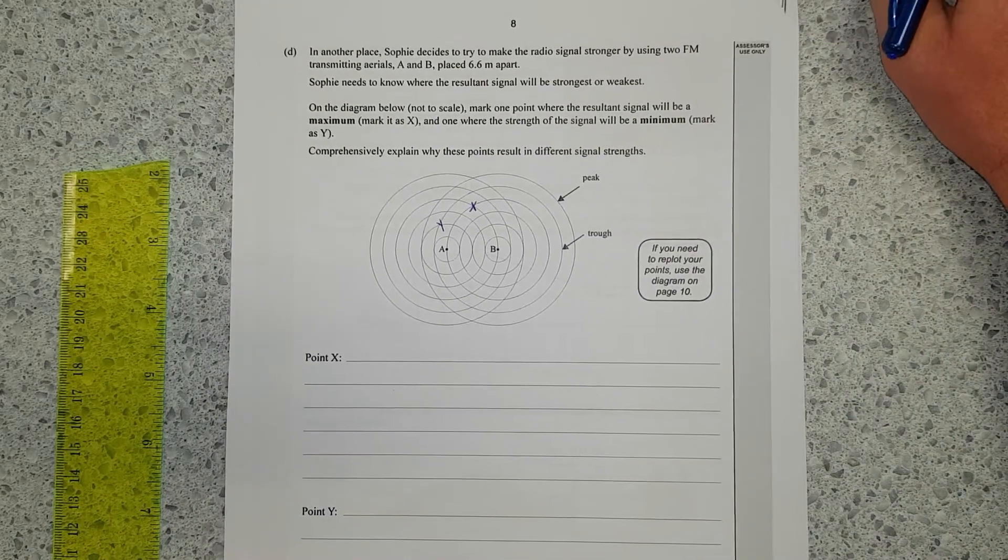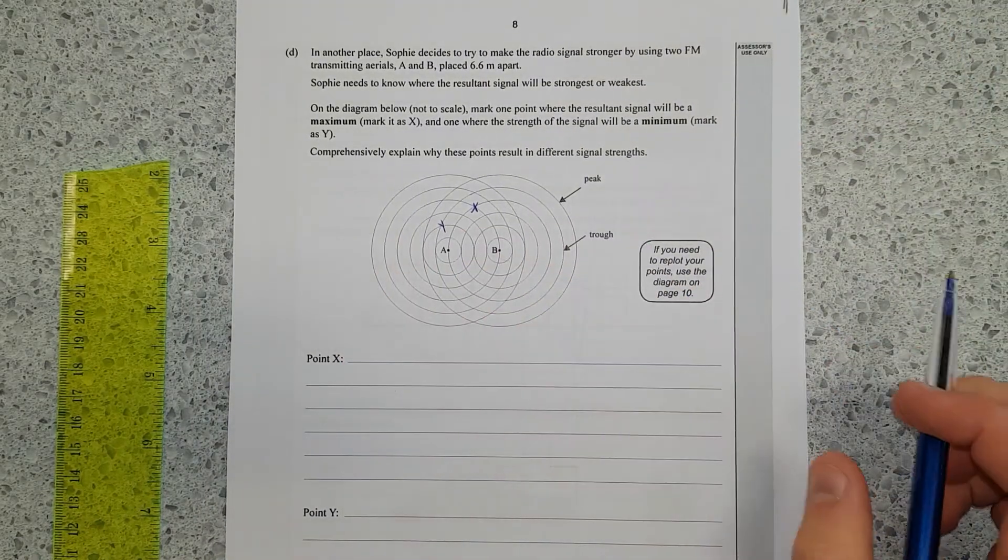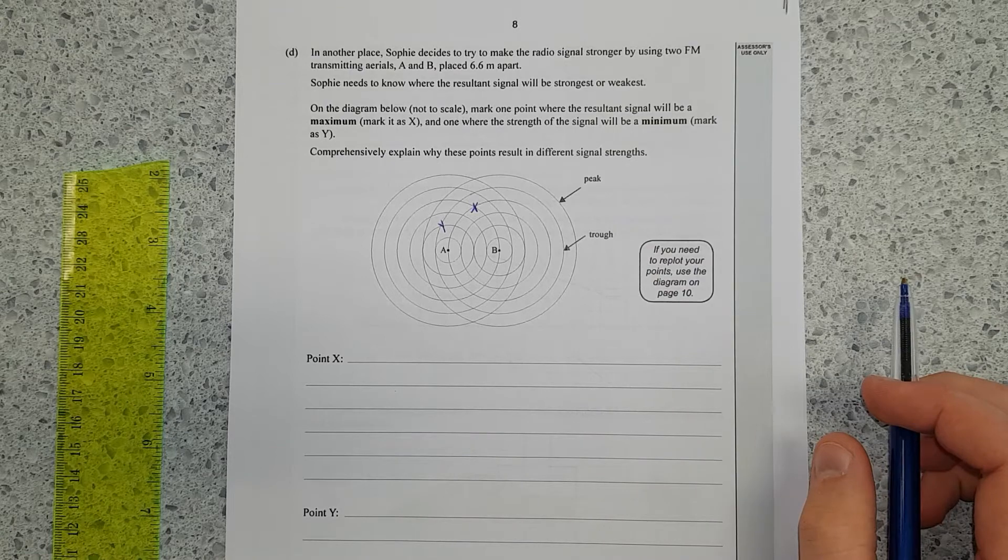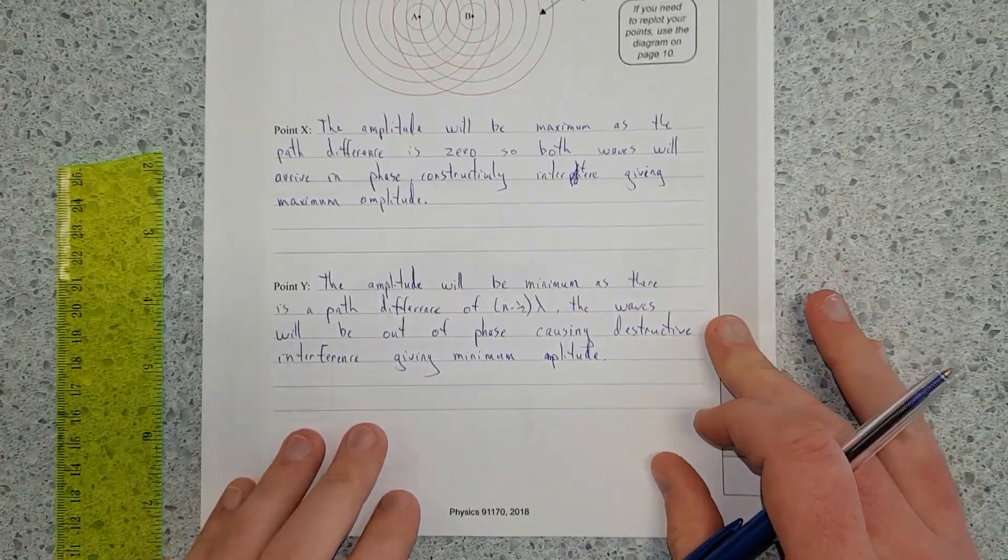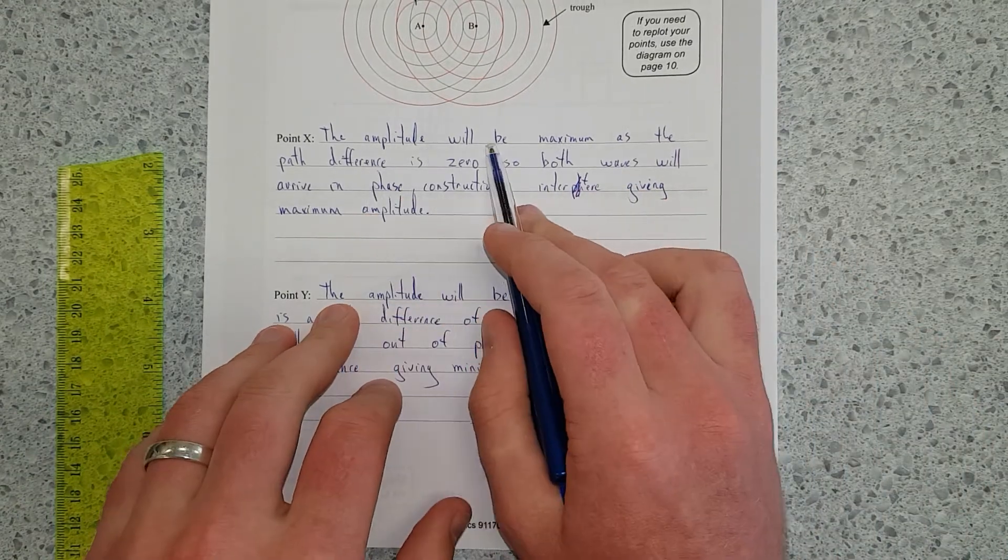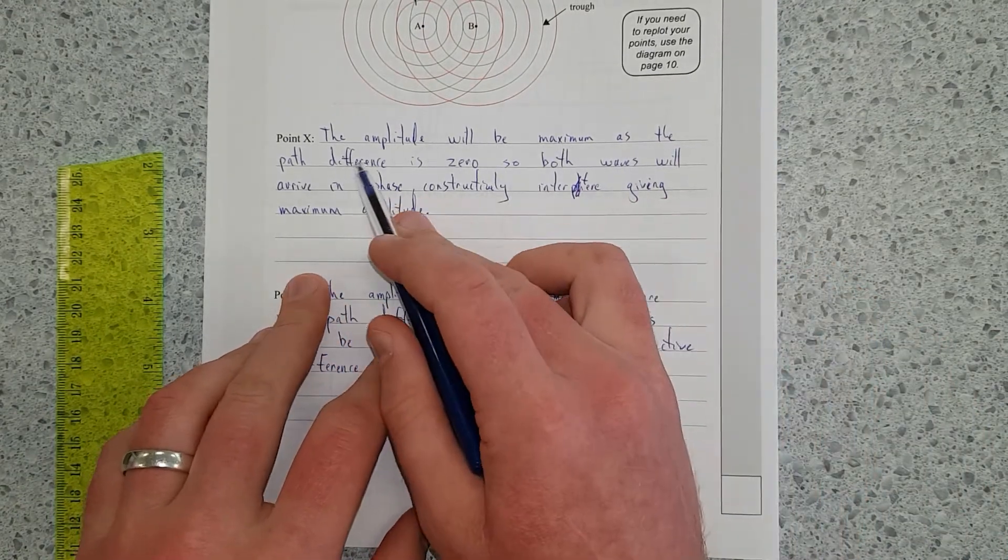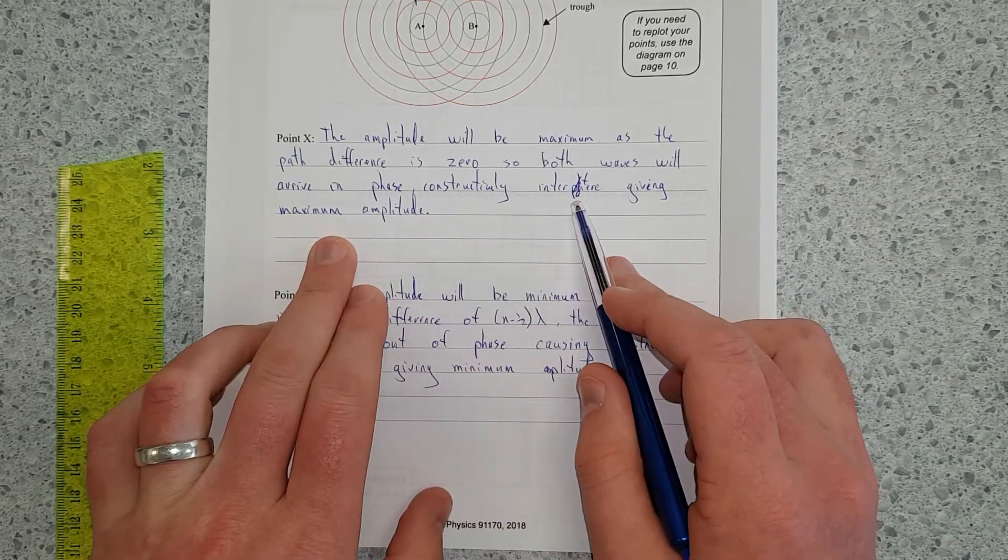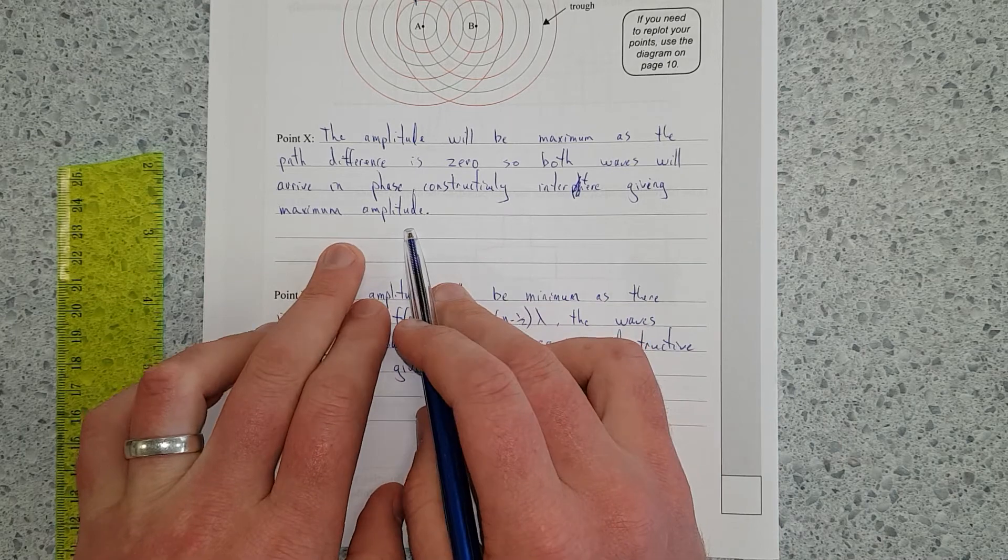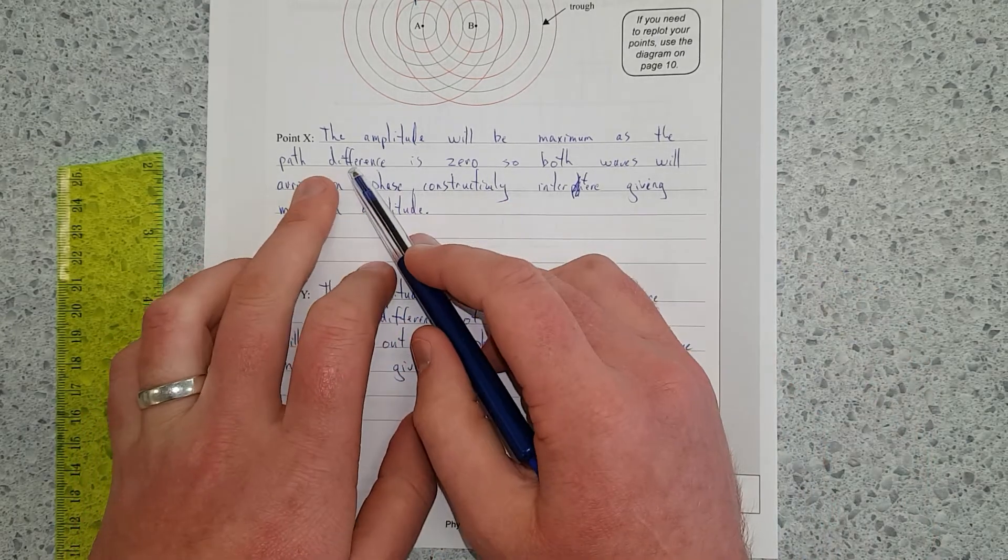Comprehensively explain why these points result in different strength signals. I'll pause, write both answers, and then I'll discuss. Right, so what I've said is the amplitude will be maximum as the path difference is zero. So both waves will arrive in phase, constructively interfere, giving maximum amplitude.